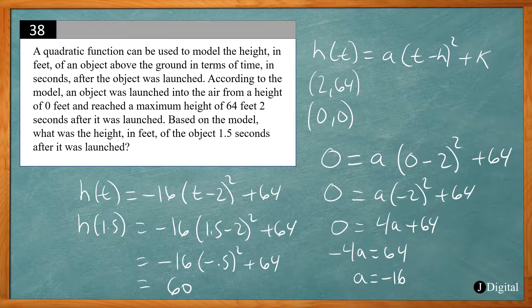Okay, so that's two ways to do it. If you didn't know the projectile motion where the a is negative 16, you can solve for a, and then put that in the vertex form, and then plug in your 1.5 seconds. So that's how you solve projectile motion problems on the SAT. Thank you.